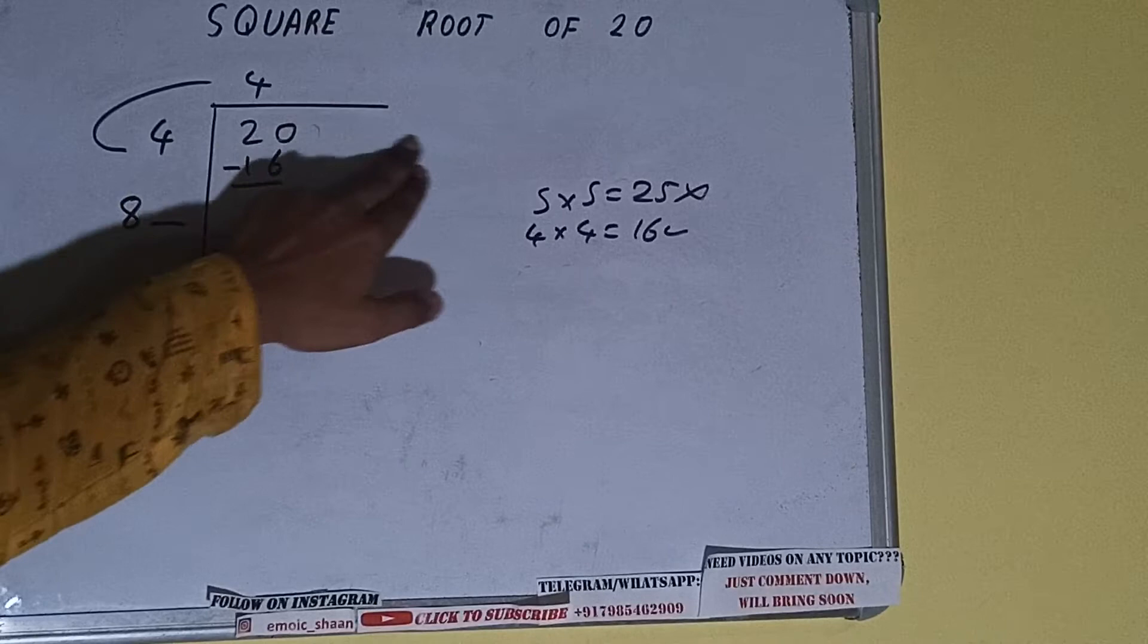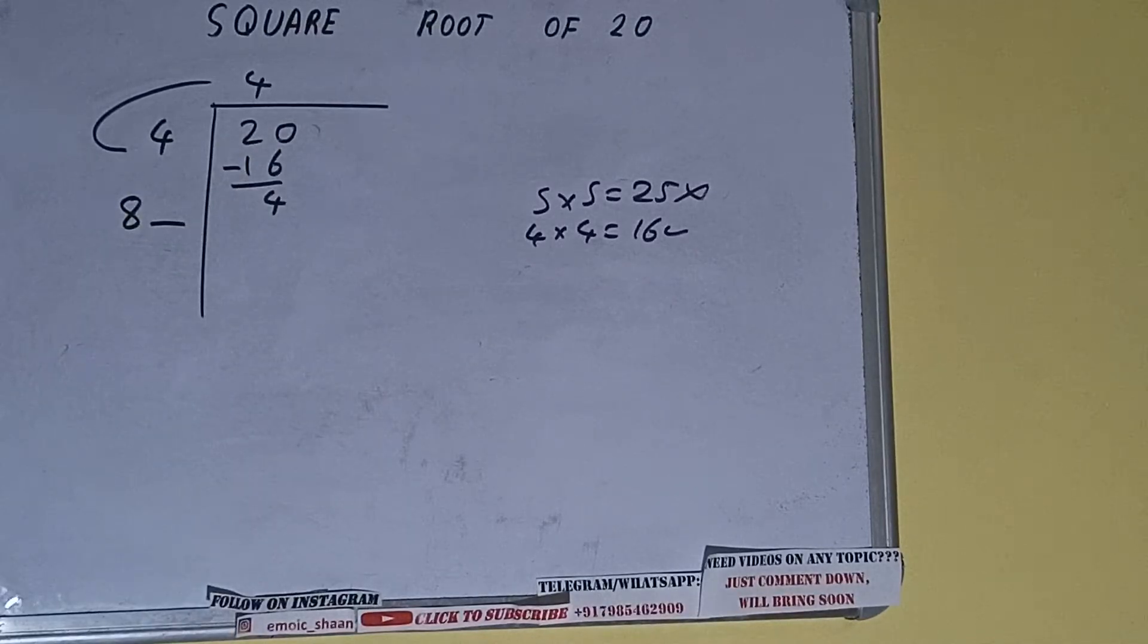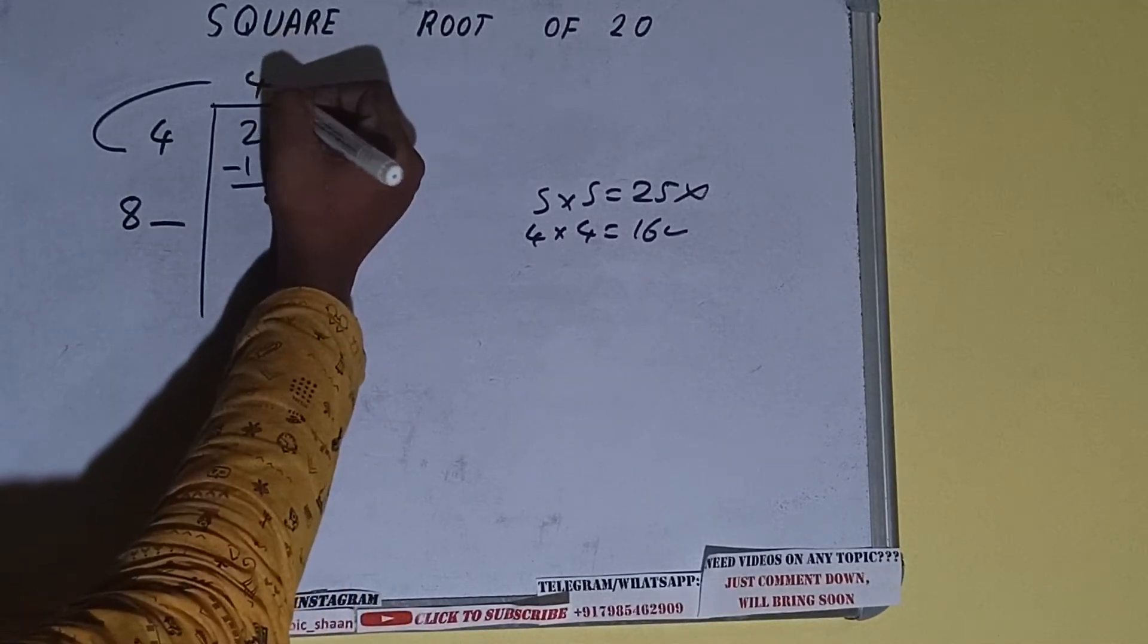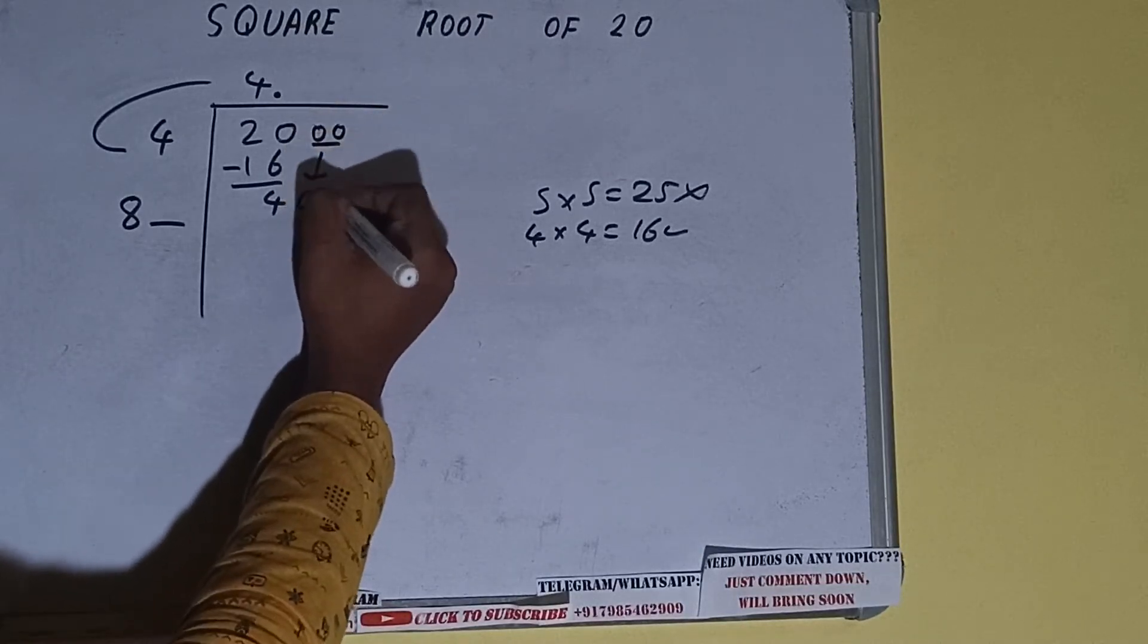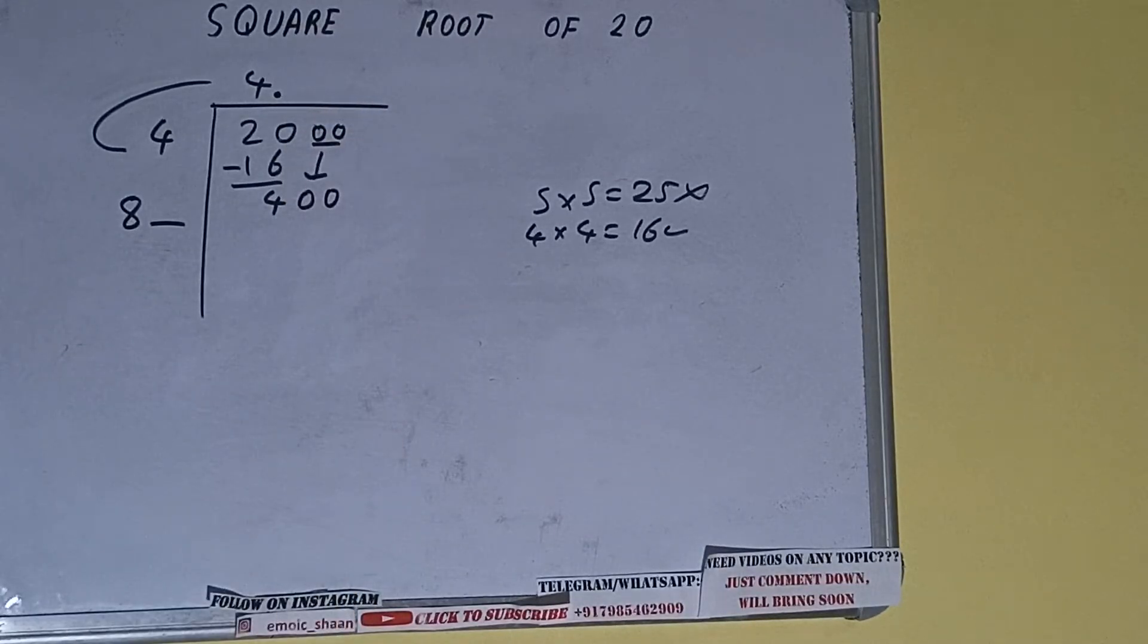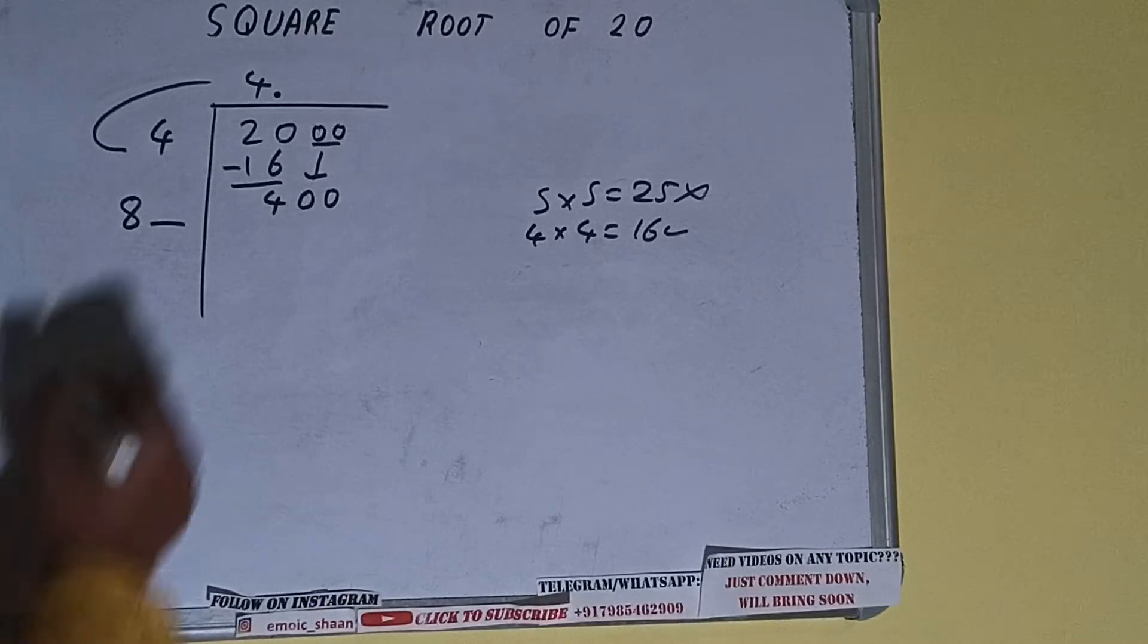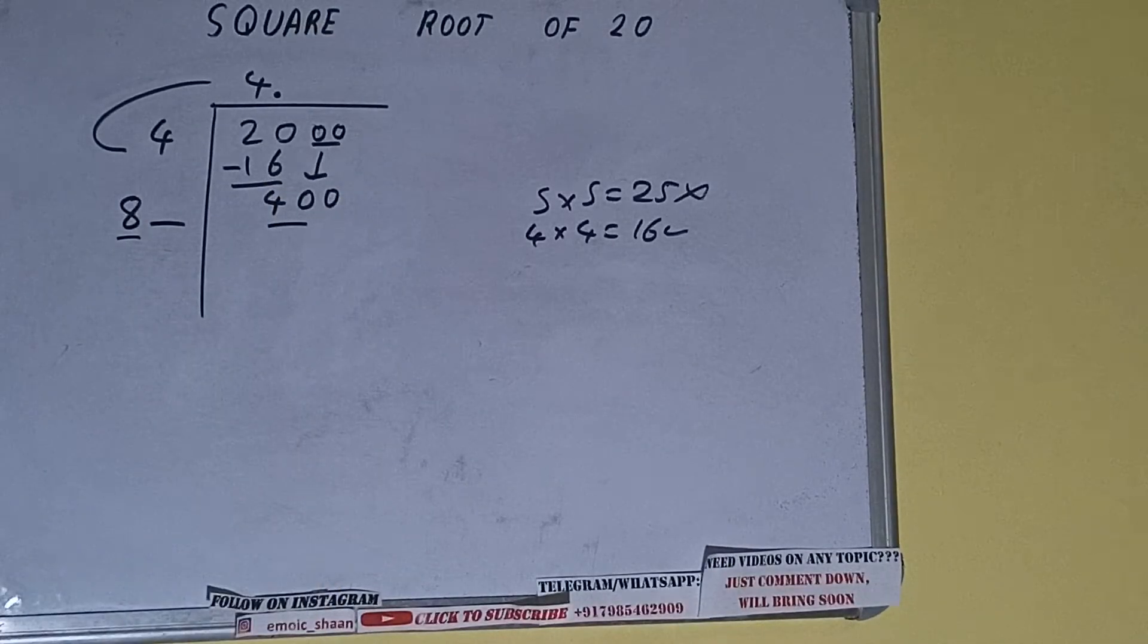But we don't have more pairs, so we'll put decimal. Once we put decimal, we can bring a pair of zeros down and the number will become 400. Now we can compare this 8 with this 40.